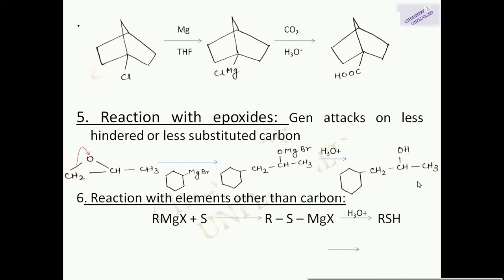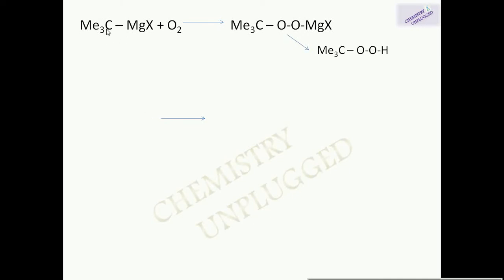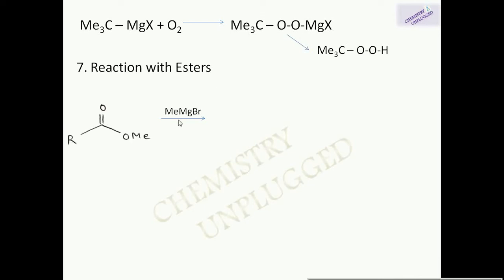Synthetic application 7: reactions with elements other than carbon. Using sulfur gives thiols. Reacting with SO₂ gives sulfenic acid. Reacting with oxygen gives peroxides — for example, tertiary butyl Grignard reagent reacts with O₂, which inserts into the C–Mg bond, and hydrolysis gives tertiary butyl hydroperoxide.